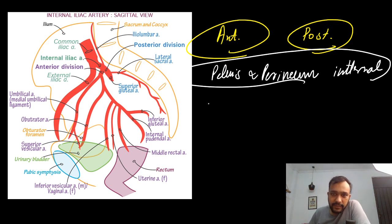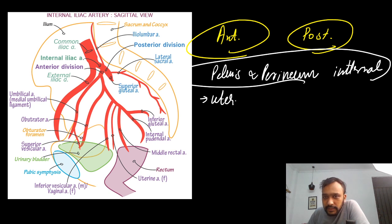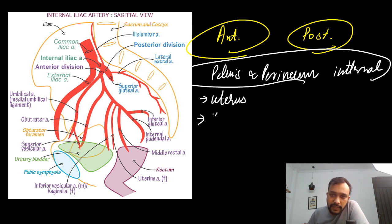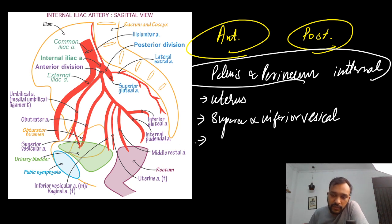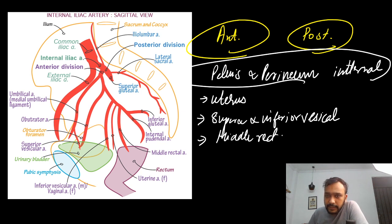We have the uterus within the pelvis, so there is a uterine artery. We have the bladder within the pelvis, so we have superior and inferior vesical arteries for the bladder. For the rectum, we have your middle rectal artery.